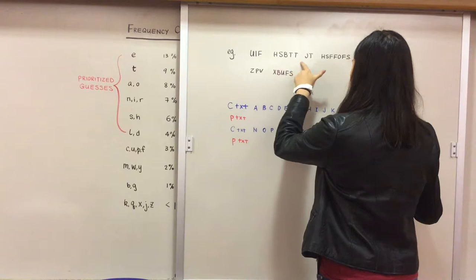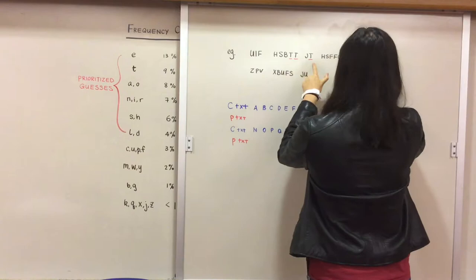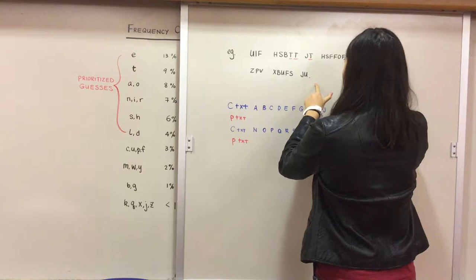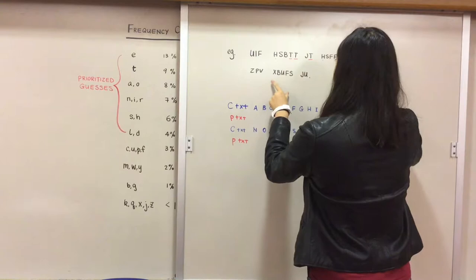So let's see. UIF, HSBTT. One, two, three. We've got three T's. H, H, two H's.